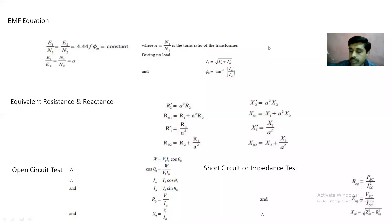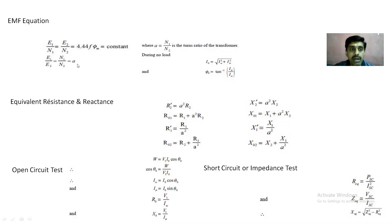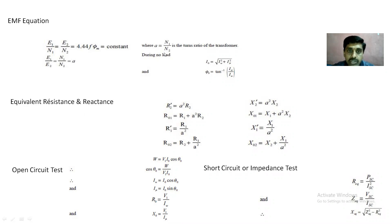We have seen some problems on the transformers previously. Now we are going ahead with a few more problems. Before doing that, let us see some formulas related to transformers. This is the EMF equation. The ratio E1/E2 = N1/N2 = A, or it can be written as E2/E1 = N2/N1 = K. A is called the turns ratio of a transformer, and K is called the transformation ratio.